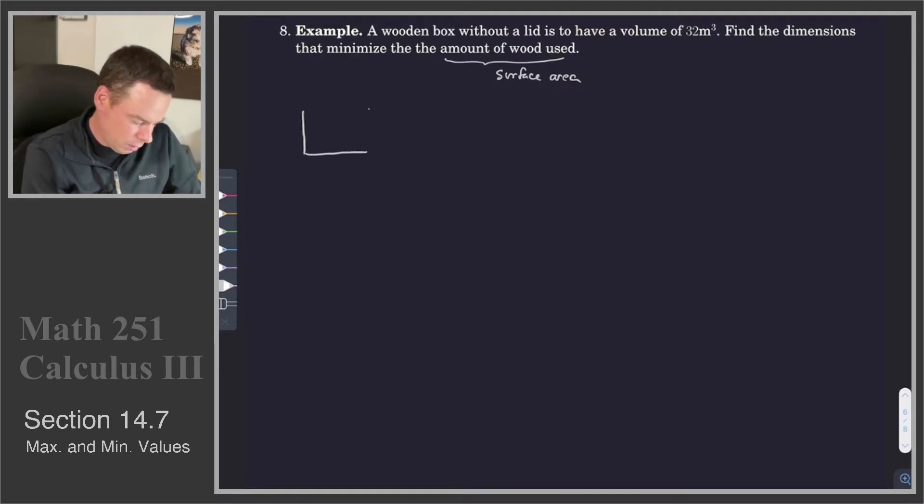Let's get a feel for what this looks like. You've got a rectangular box, and we can throw some variables in for the dimensions. Let's say width is x, this depth here is y, and the height is z. So we have a volume which is xyz. That's to be 32.